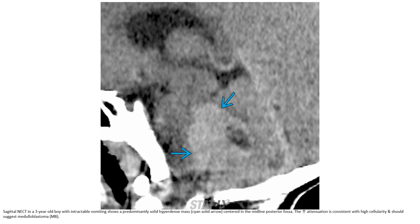Non-contrast CT in a three-year-old boy with intractable vomiting shows a predominantly solid hyperdense mass centered in the midline posterior fossa. The increased attenuation is consistent with high cellularity, which should suggest medulloblastoma.